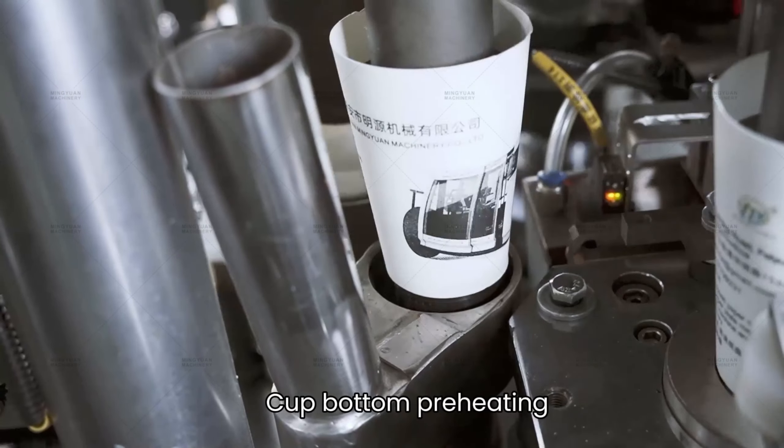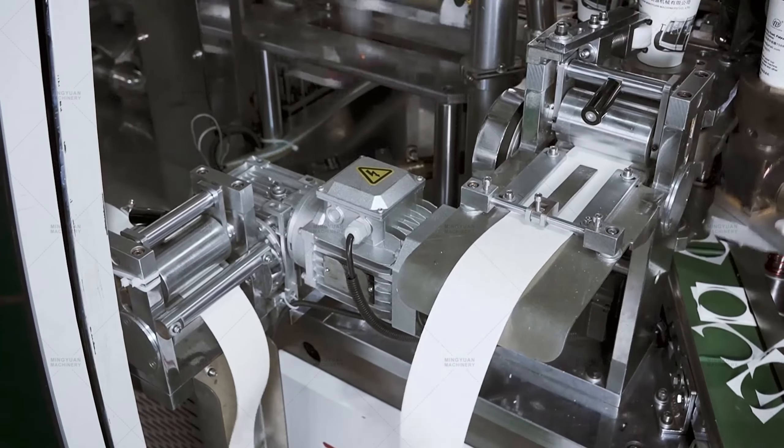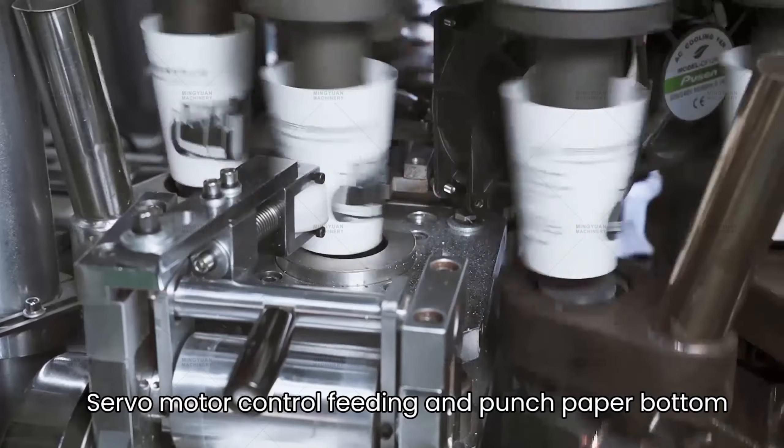Cup bottom preheating is performed before a servo motor controls the feeding and punching of the paper bottom.